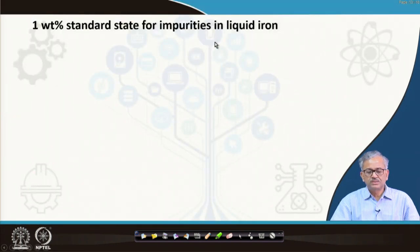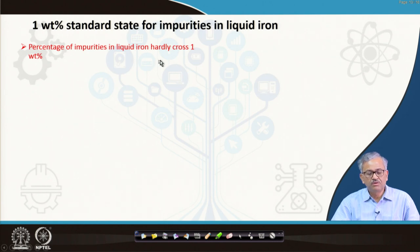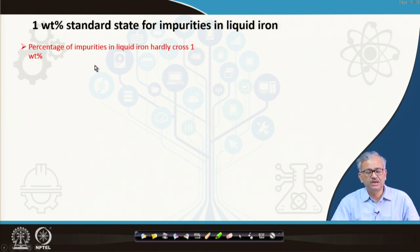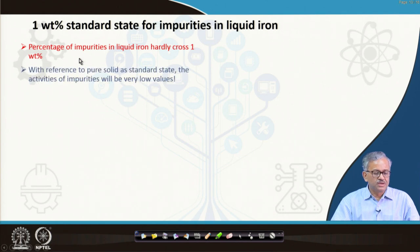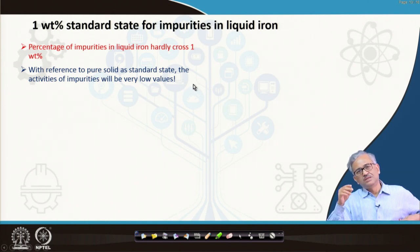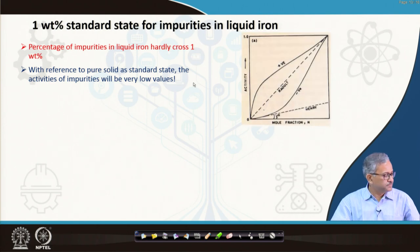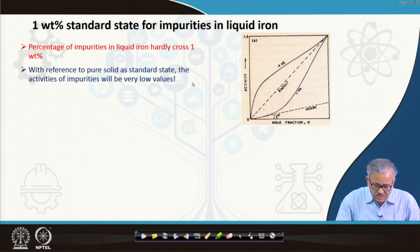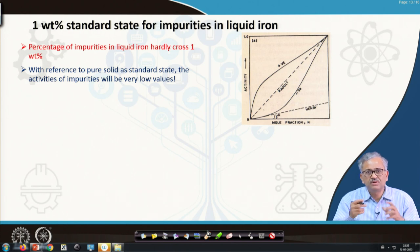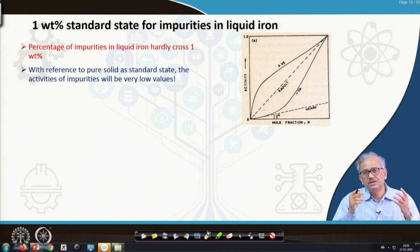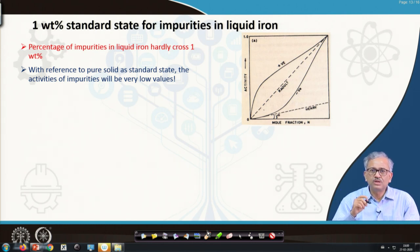Usually, the activity of impurities in liquid iron is expressed in terms of the 1 weight percent standard state. The percentage of impurities in liquid iron hardly crosses 1 weight percent; most are much less, though silicon can be slightly higher. With reference to pure solid at the standard state, the activity of an impurity will be a very low value. This is related to Raoult's law, where pure solid is taken as the standard state.